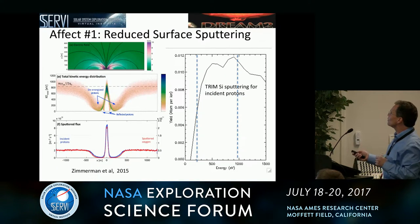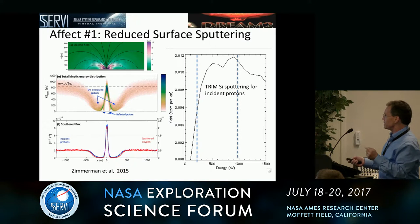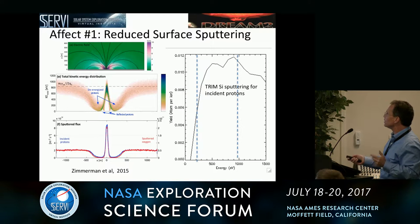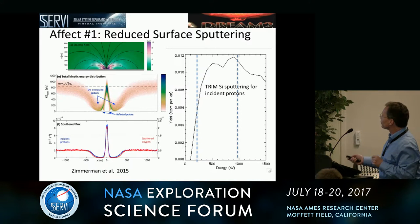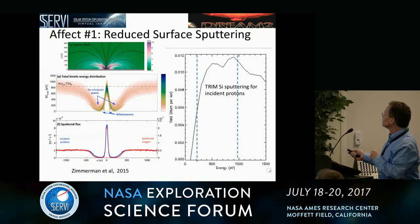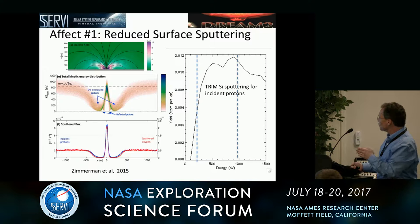One effect is reduced sputtering. You get reduced sputtering for two reasons: there's just overall less flux into the region, and as the energy decreases, the yield drops as well. This is from a TRIM run for silica, looking at silicon sputtering, and you can see it drops by about a factor of two or three as you go to lower energies, from 1000 eV down to 200 eV.